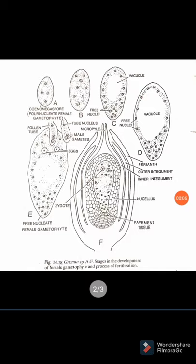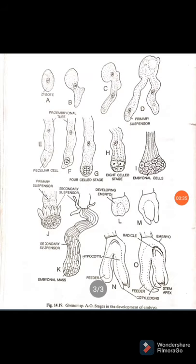The fusion of male and female gametes during fertilization leads to the development of a zygote. The diploid zygote is considered the first cell of the sporophytic generation, because this embryo will lead to the development of either the male or female plant. This zygote germinates and develops into an embryo inside the ovule itself.